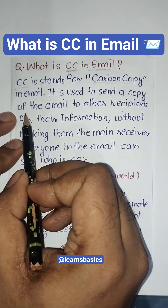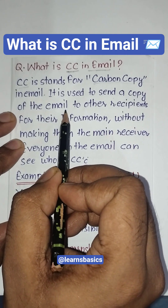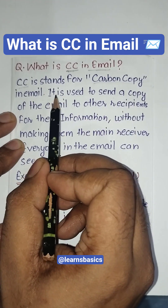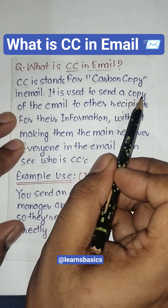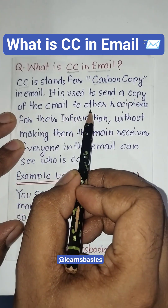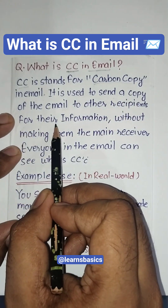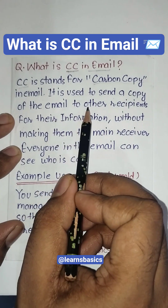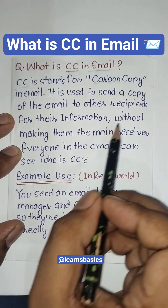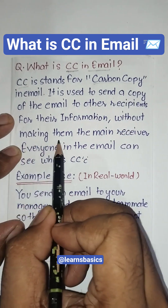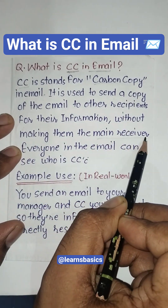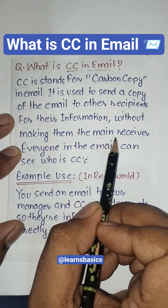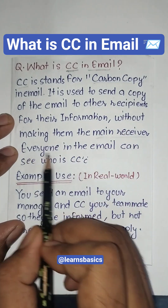CC is used to send a copy of the email to other recipients for their information. This means you are informing other recipients without making them the main receivers. That is the important statement — without making them the main receiver.